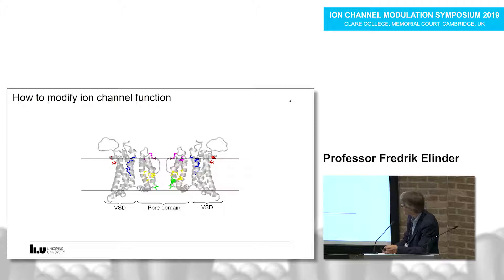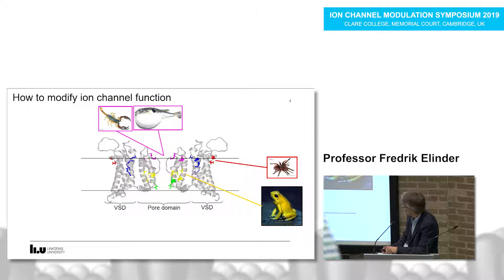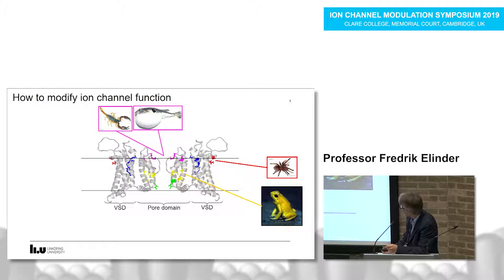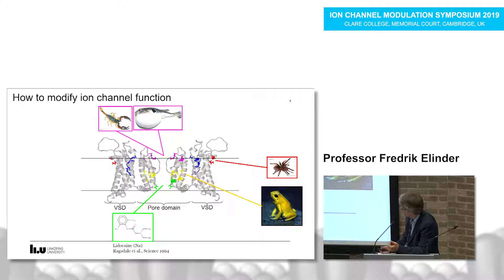How can we modify ion channels? There are a number of known alternatives. Some known animal toxins act on sodium channels, some on potassium. We have batracotoxin from arrow poison frogs, a number of spider toxins, classical tetrodotoxin from puffer fish, and scorpion toxins that plug the entrance of the channel. Spider toxins act on the voltage sensor domain in the periphery. Lidocaine, a local anesthetic, blocks the internal pore of the ion channel.